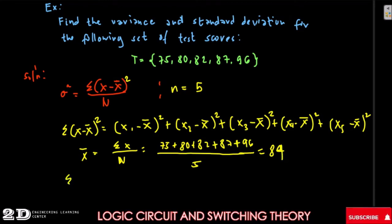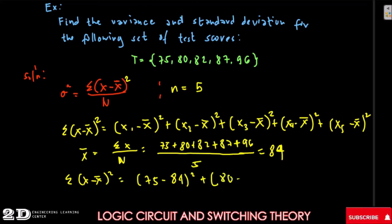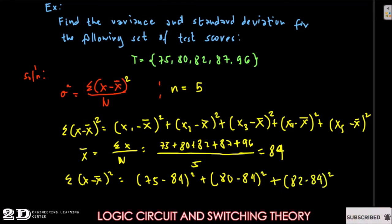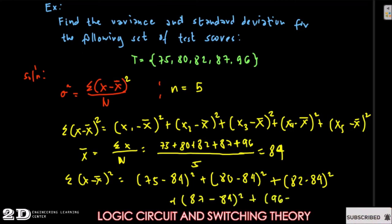Now we substitute into the summation formula. The summation of x minus x-bar squared equals: (75 − 84)² plus (80 − 84)² plus (82 − 84)² plus (87 − 84)² plus (96 − 84)². Let's move to a new page to give ourselves more space.